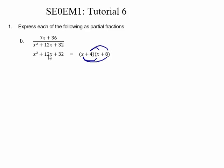So x squared plus 12x plus 32 can be factored as x plus 4 times x plus 8, which means that we can write our original expression as A over x plus 4 plus B over x plus 8.